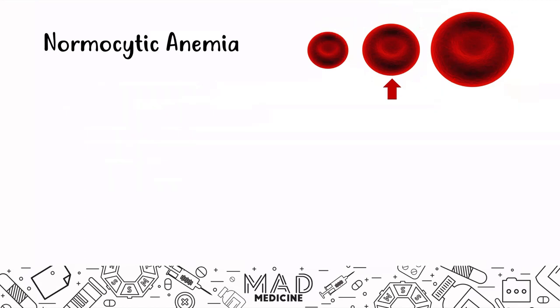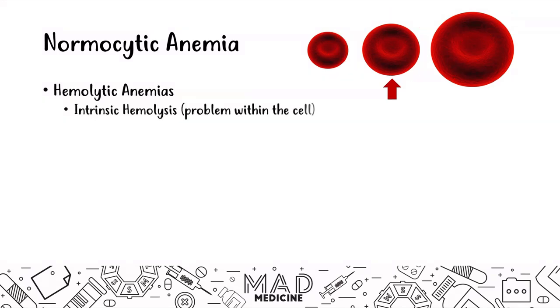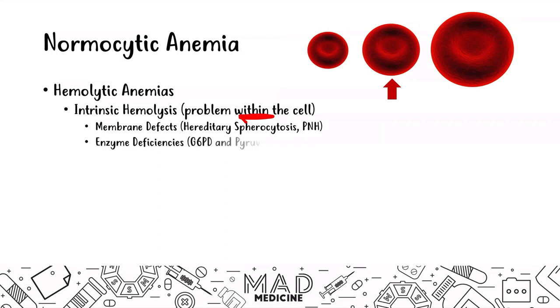Hemolytic anemias can be intrinsic, where the problem is going to be within the cell. That problem can be due to membrane defects — problems with the cell membrane — or it can be due to enzyme deficiencies, and that's what we're going to be discussing today: pyruvate kinase deficiency. We have already discussed membrane defects, hereditary spherocytosis, PNH, and G6PD deficiency, so you can watch those videos in the playlist.